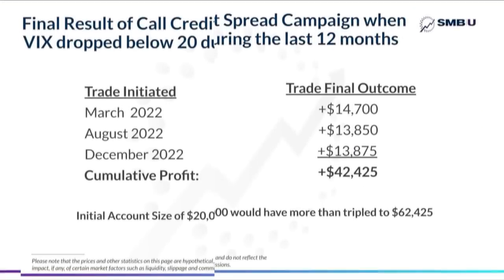And so as you can see, accumulating the profits from all of the completed trades over the last 12 months would have more than tripled a $20,000 account, which would have exceeded an account value of over $60,000, utilizing the VIX below 20 as an indicator of a market downturn.